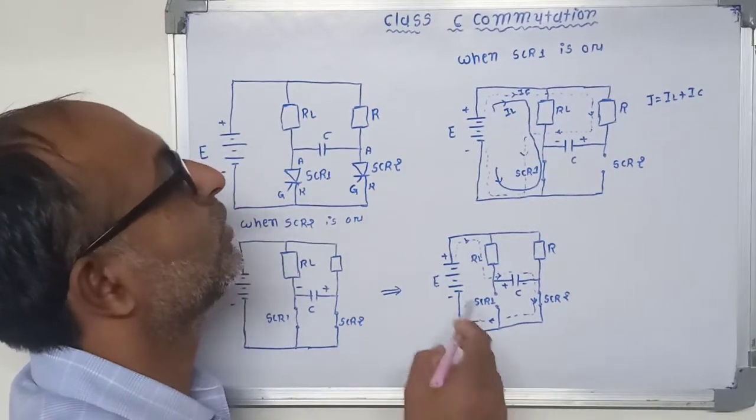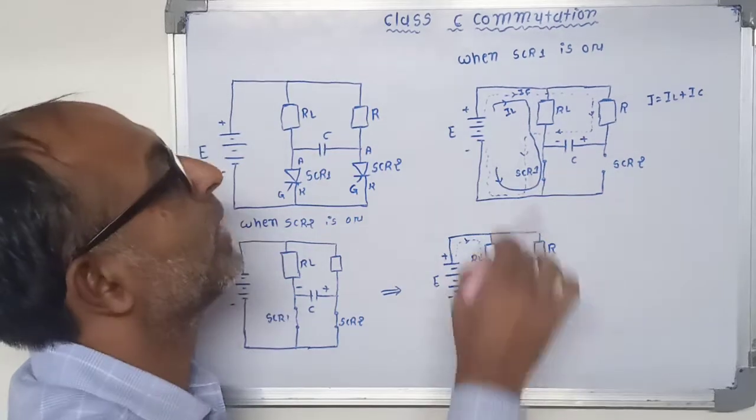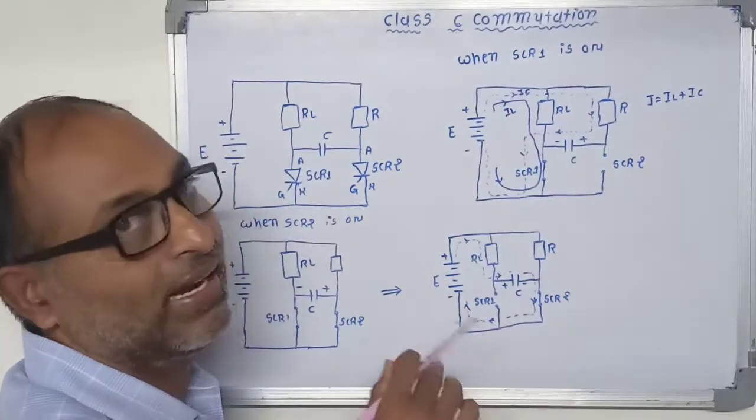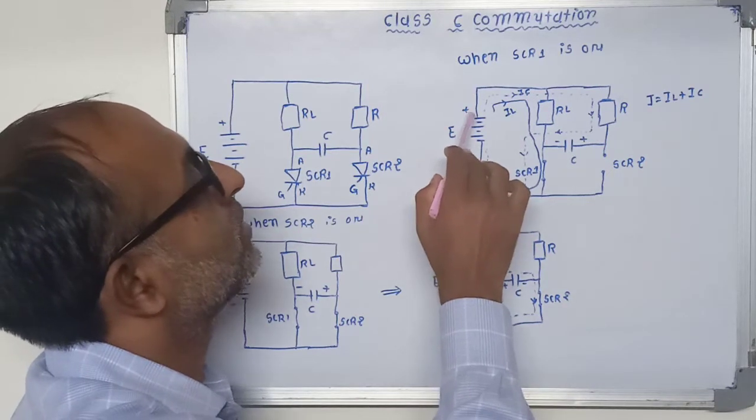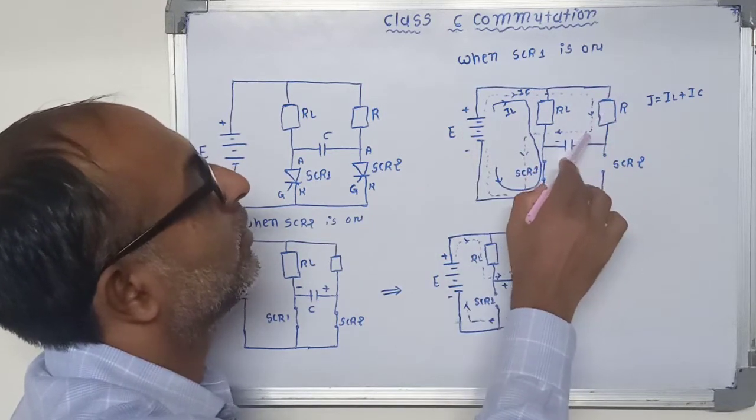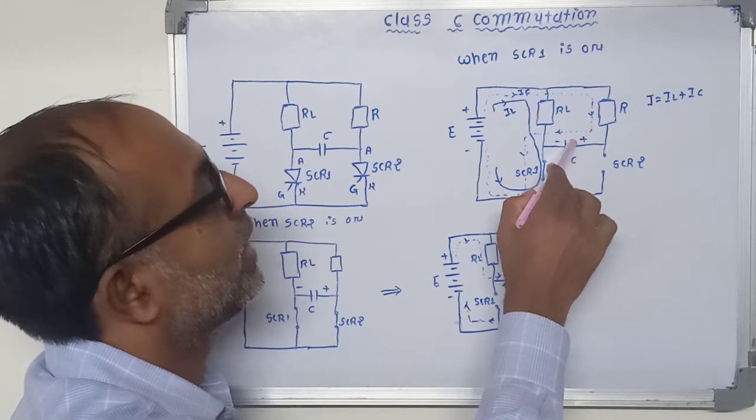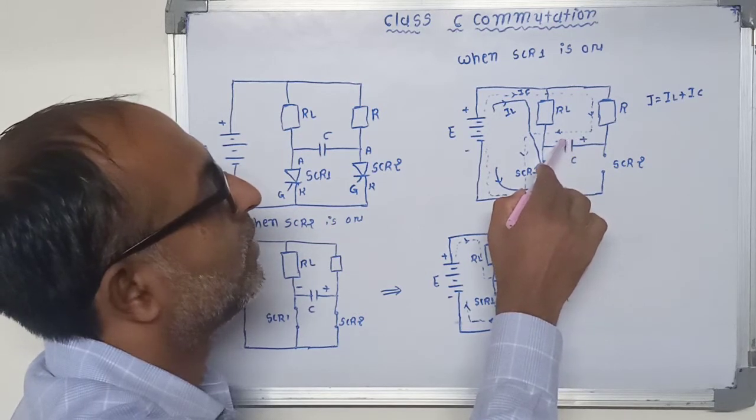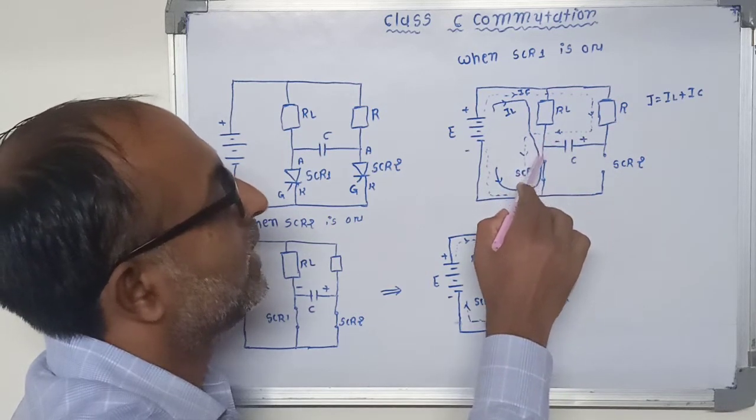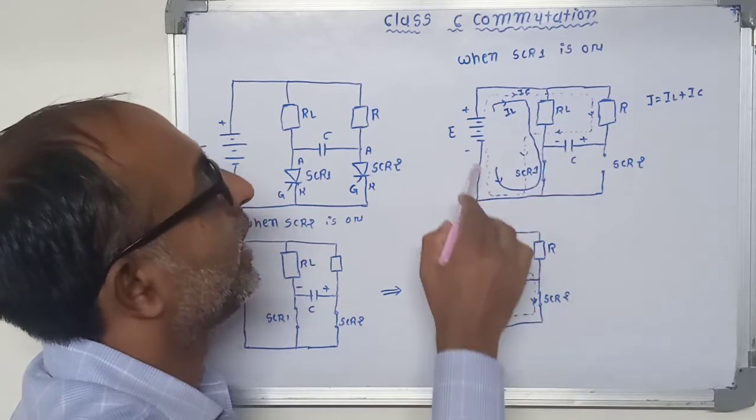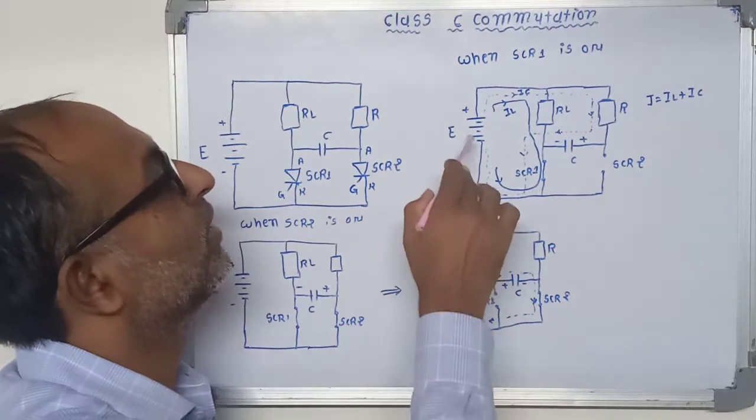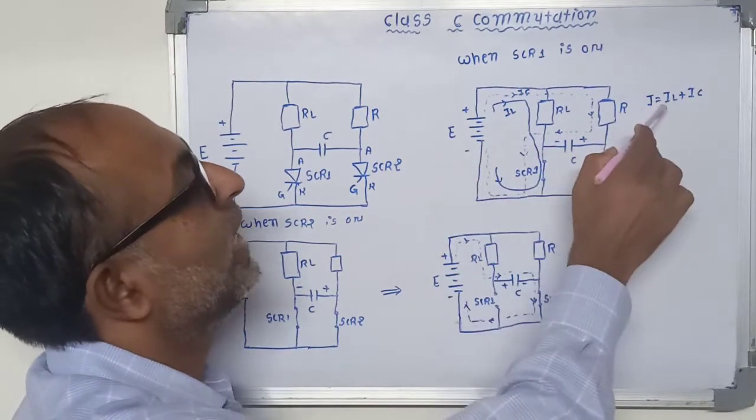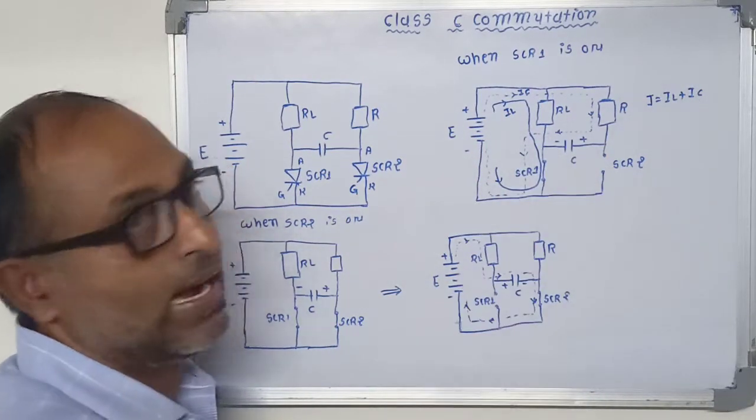Now another current passing through this capacitor. That's why it is called charging current and it provides path plus E to R, one plate of capacitor, then another plate of capacitor and SCR1, anode cathode and negative terminal of E. Now the total current passing through this battery or supply is equal to I is equal to IL plus IC.